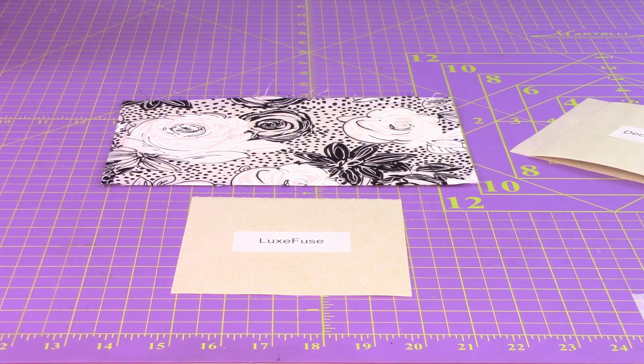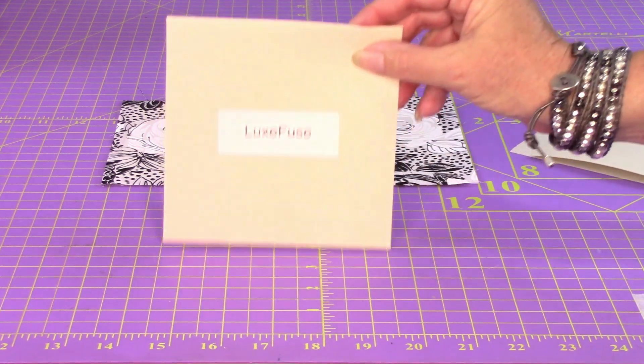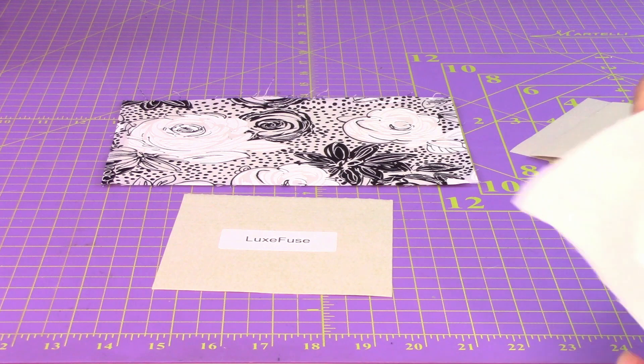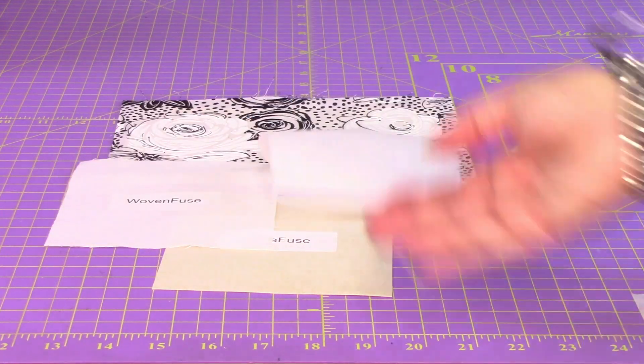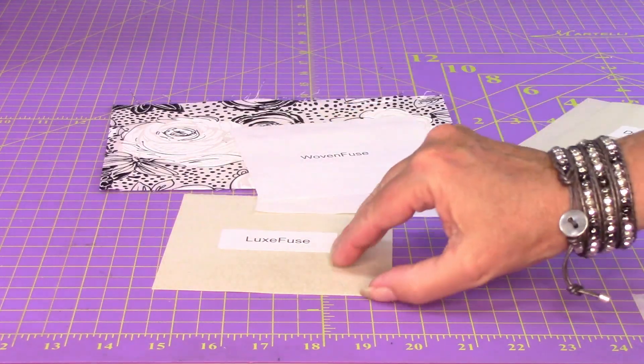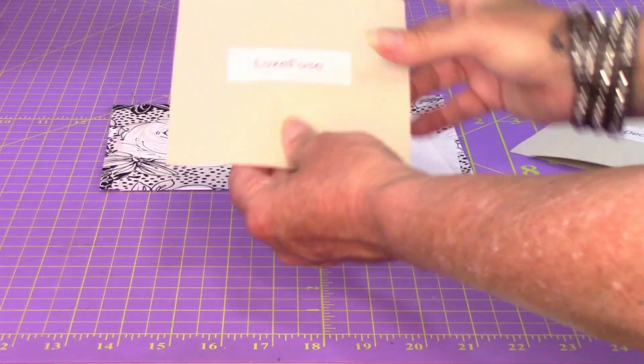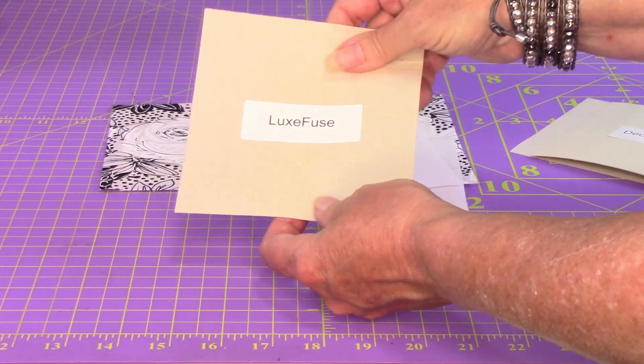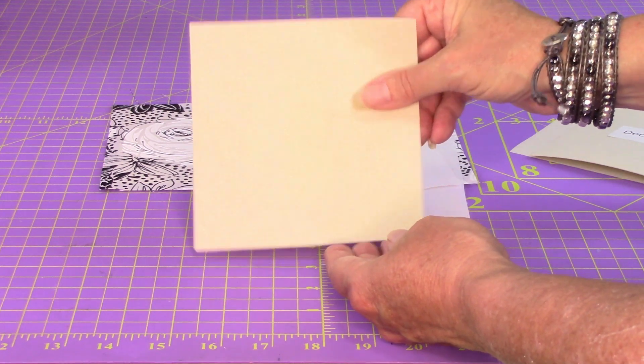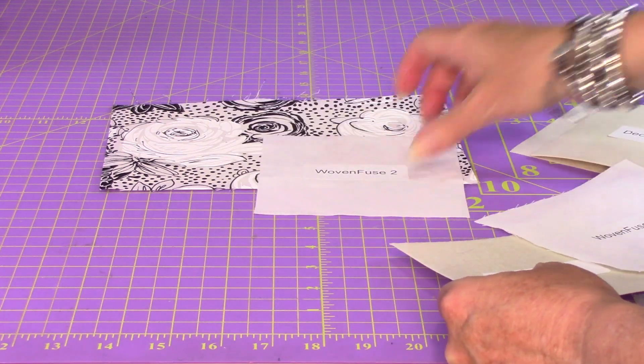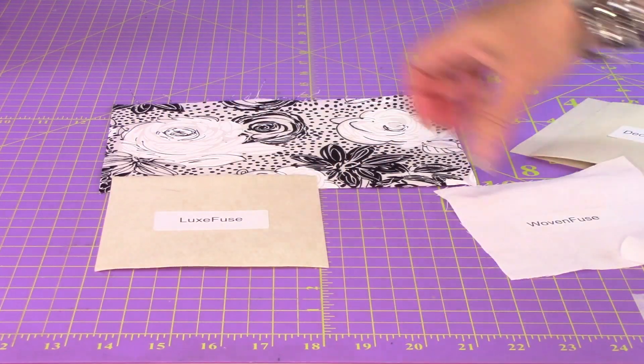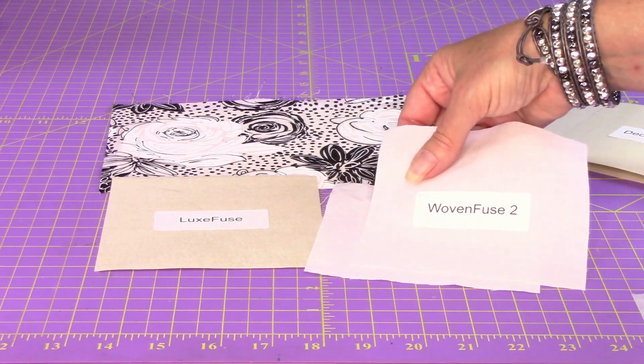Now I want to show you something. LuxFuse, as opposed to the woven fuse or woven fuse too, these are wovens. This is not a woven. This has a leather-like feel. You can see maybe the glue on the back. The glue on the back reminds me a little bit of woven fuse too, the glue on the back of it. So you'll notice that they're definitely different colors.